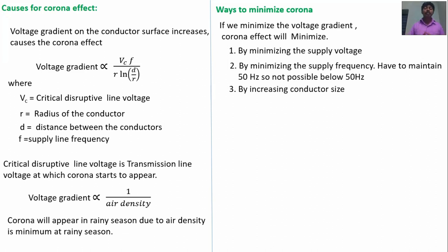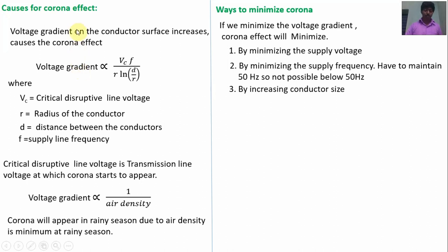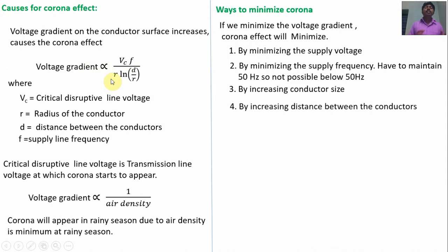We can increase the conductor size, but the cost per conductor may increase. By increasing the conductor size, we can minimize the voltage gradient because voltage gradient and radius of the conductor are inversely proportional. If the conductor size is increased, the voltage gradient will be decreased, and if voltage gradient decreases, corona effect decreases. Fourth, by increasing the distance between the conductors — distance D and voltage gradient are inversely proportional. Fifth, by increasing the air density — air density and voltage gradient are inversely proportional.